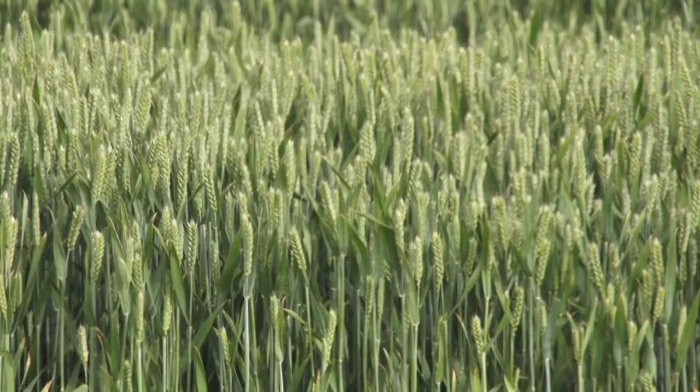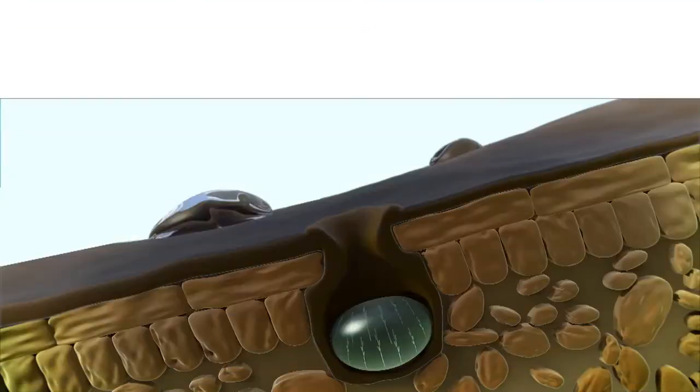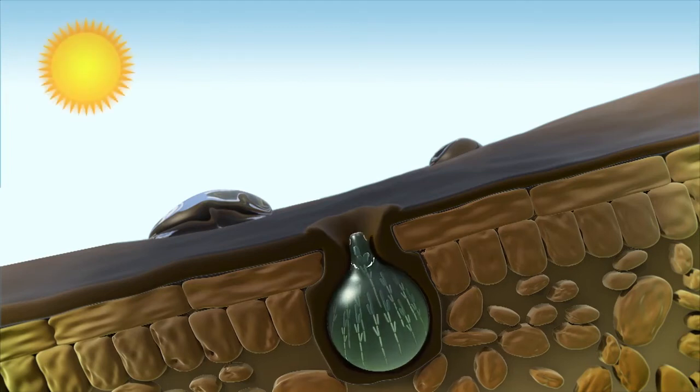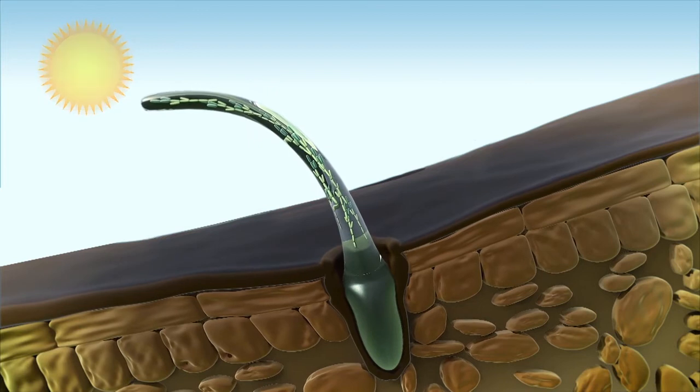Then in drier weather conditions the surrounding tissue shrinks faster than the developing spores, thus forcing them to be squeezed from Pycnidia onto the surface of the decaying leaf.